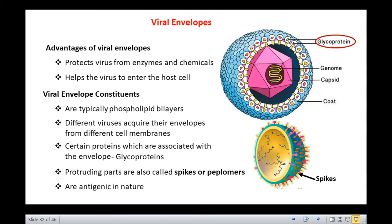These protruding parts are called spikes or peplomers, and they are antigenic in nature. Rhabdoviruses, paramyxoviruses, and influenza viruses are some enveloped viruses which have glycoprotein spikes. Many of the proteins are present as multimers.